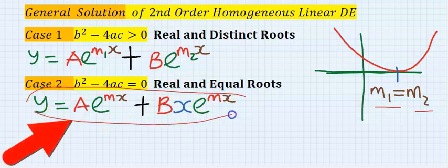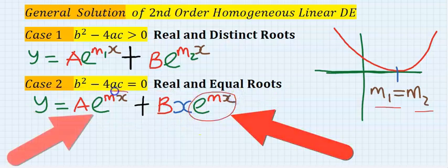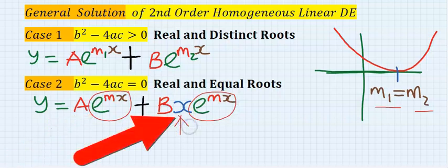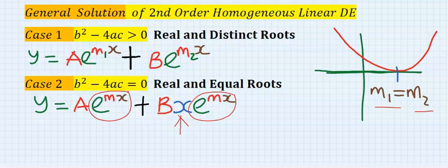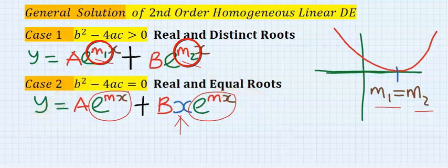This becomes the general solution to the ordinary differential equation. You can see that this is same as this. And always remember your x after the B. If you consider the first case, you see that this m and this m are not the same.